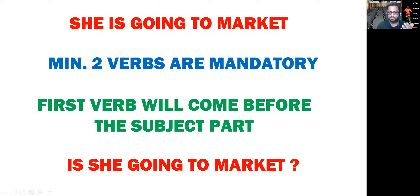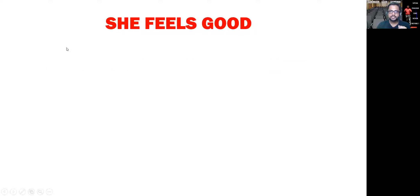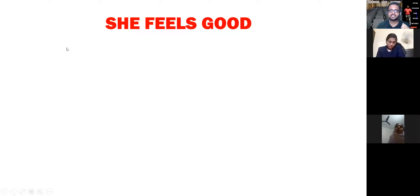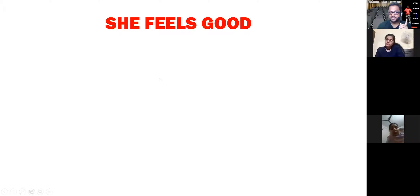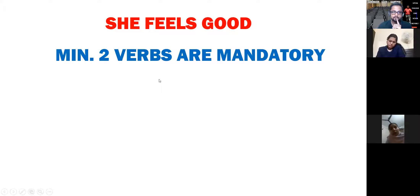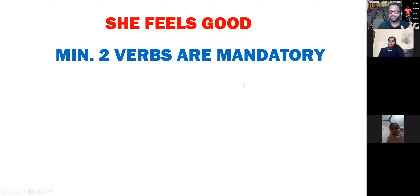I will definitely ask you questions, but before that let me show you one more sentence: 'She feels good.' This is the sentence — 'She feels good' — वो अच्छा feel करती है। Now if I want to make this interrogative, the same concept applies: minimum two verbs are mandatory. But look here — this sentence has only one verb, that is 'feels.' And we know that when one verb is missing, we have to bring an extra verb, and the extra verb always comes from the do family.